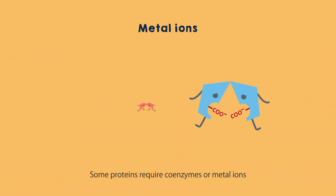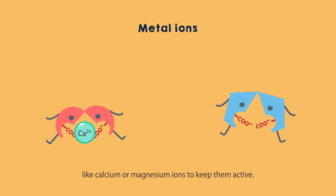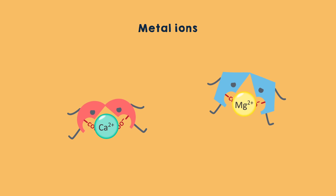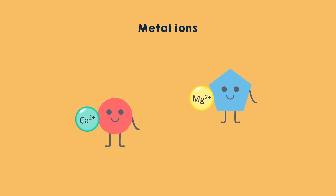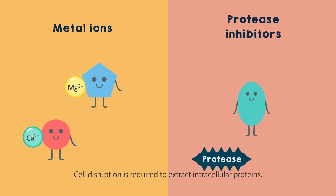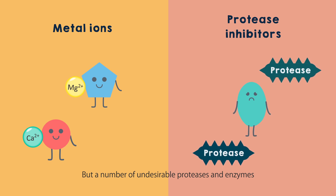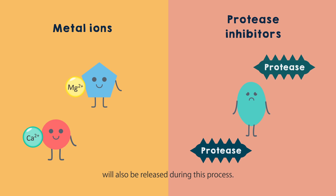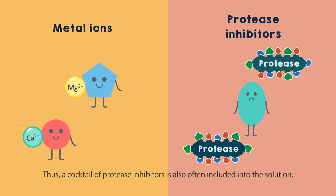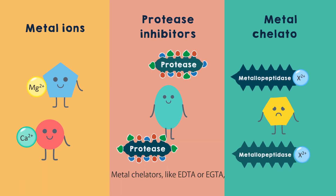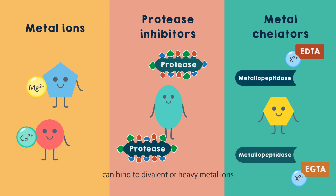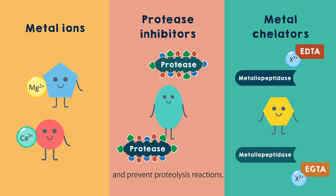Some proteins require coenzymes or metal ions like calcium or magnesium ions to keep them active. Cell disruption is required to extract intracellular proteins, but a number of undesirable proteases and enzymes will also be released during this process. Thus, a cocktail of protease inhibitors is also often included in the solution. Metal chelators like EDTA or EGTA can bind to divalent or heavy metal ions to inhibit a range of metallopeptidases and prevent proteolysis reactions.